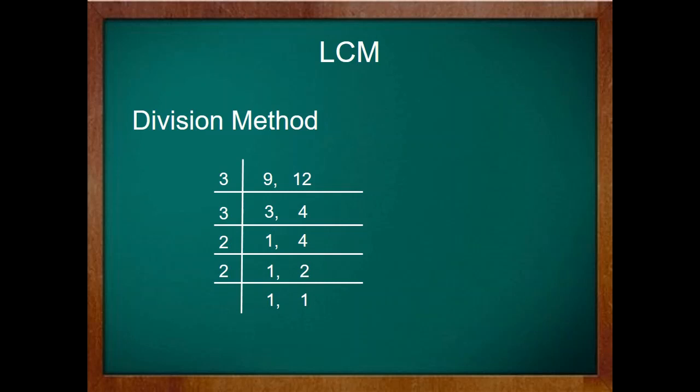Now in order to find the LCM all we have to do is to pick all the numbers on the left and multiply them. In this case we multiply 3 into 3 into 2 into 2 and the answer is 36. So this is how we find the LCM of two numbers using the division method.